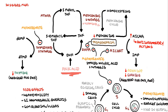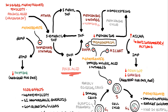In cases of severe toxicity, emergency folinic acid — also known as leucovorin — can be given to reduce methotrexate toxicity. Folinic acid is an active metabolite of folic acid and essentially bypasses the inhibited dihydrofolate reductase.